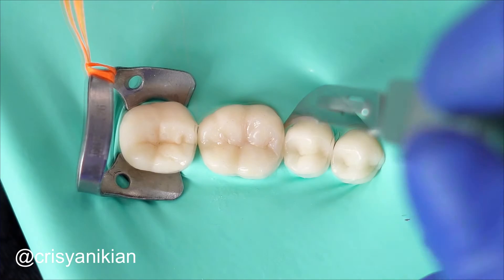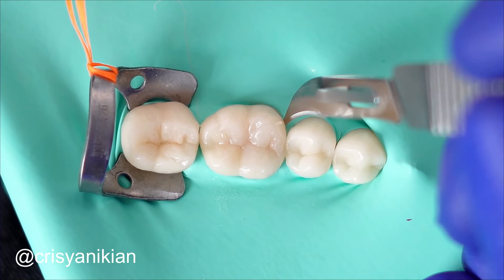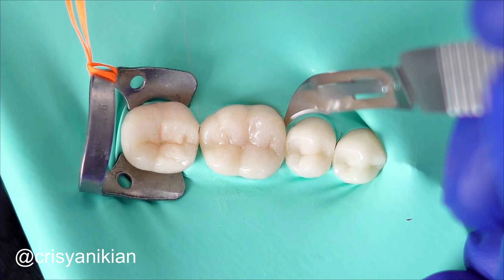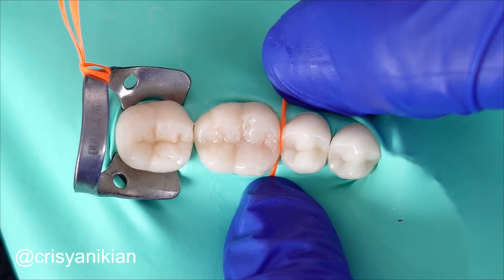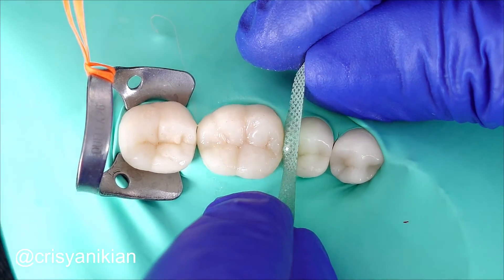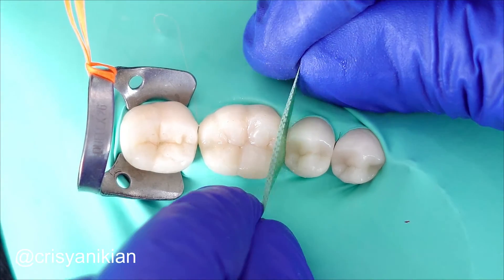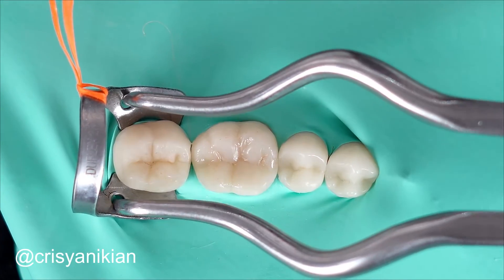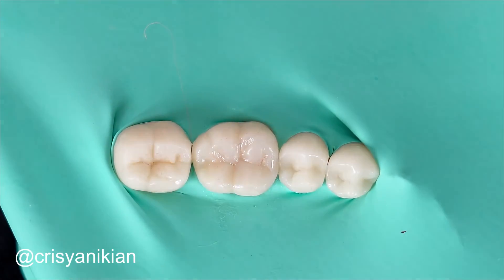Before removing absolute isolation, clear excess resin cement with a number 12 scalpel blade. Check the contact area. If needed, finish proximal surfaces with polyester strip. If everything is fine, remove the isolation and perform occlusal adjustment.